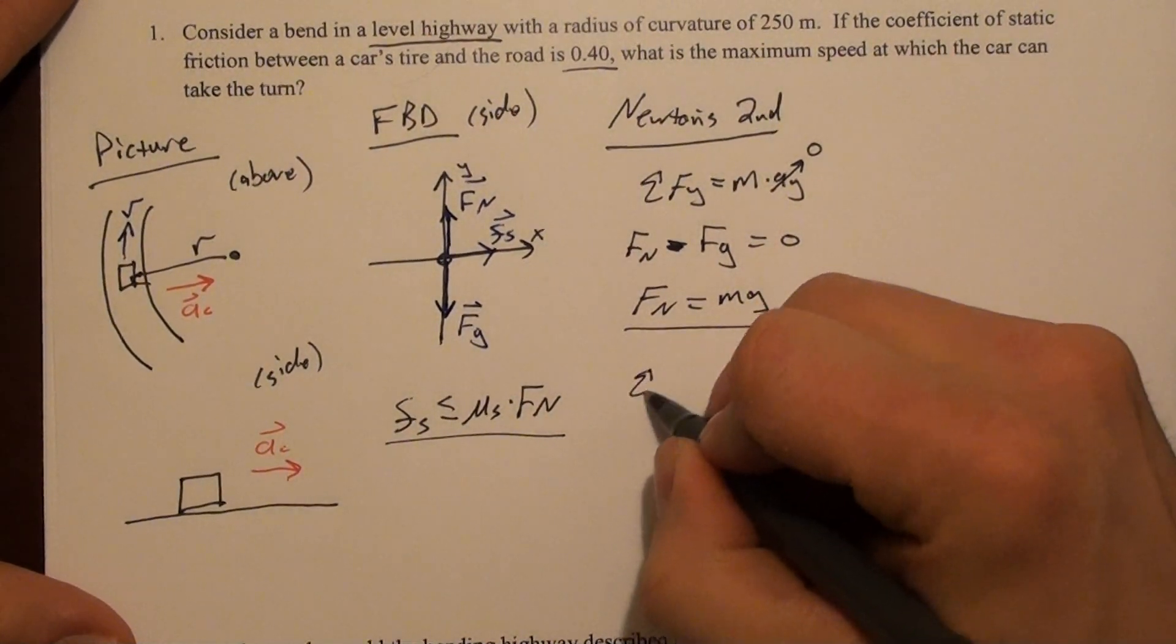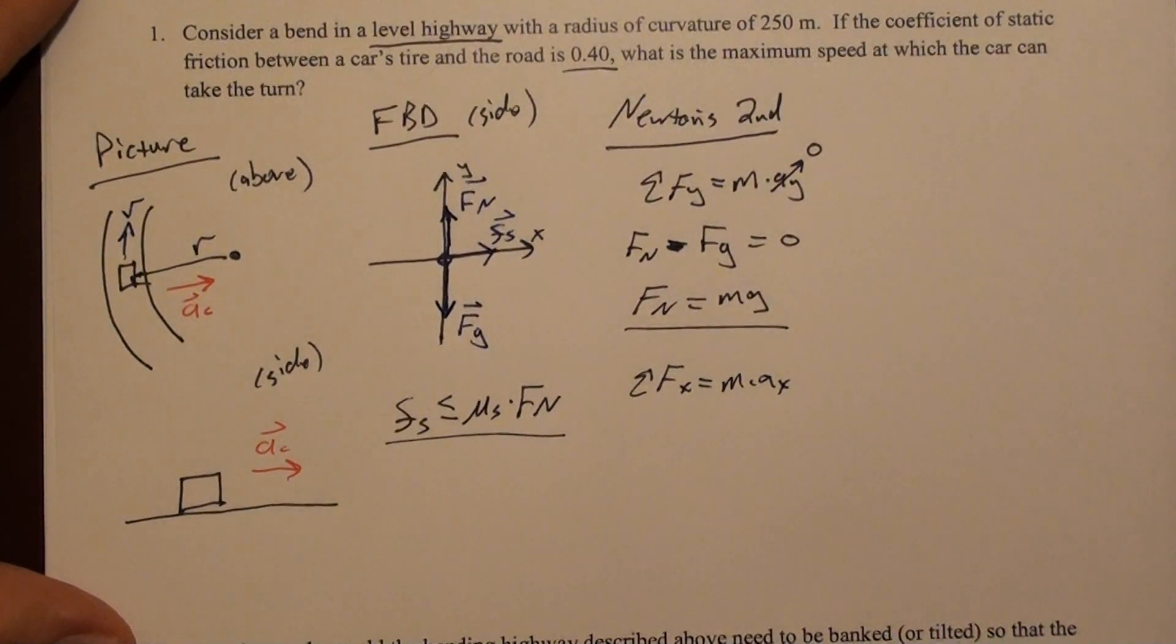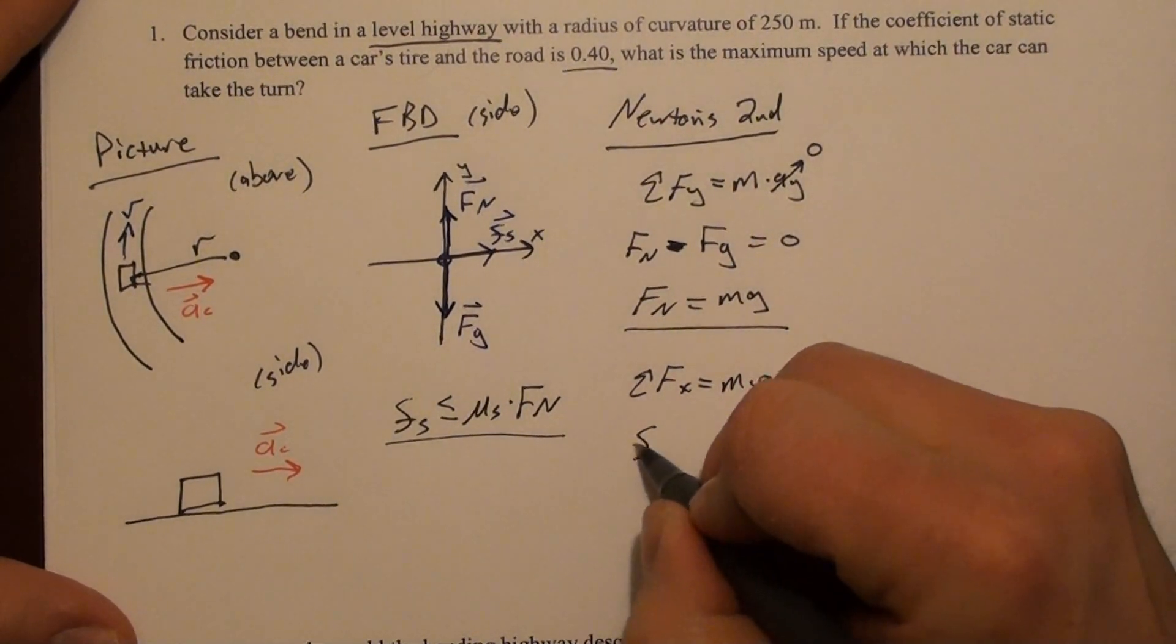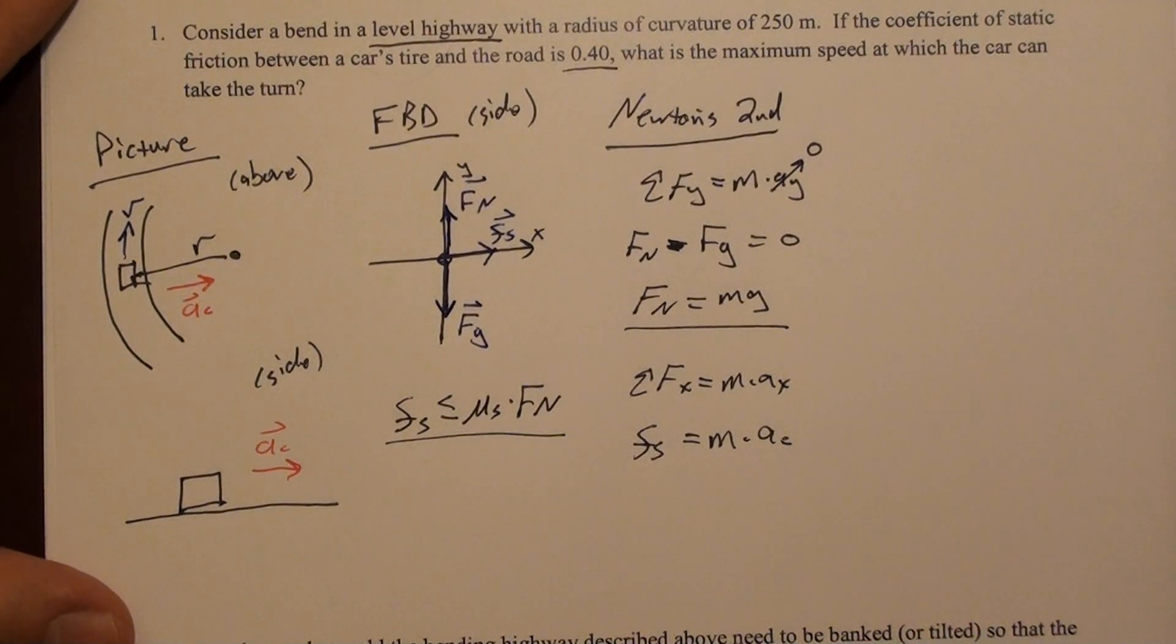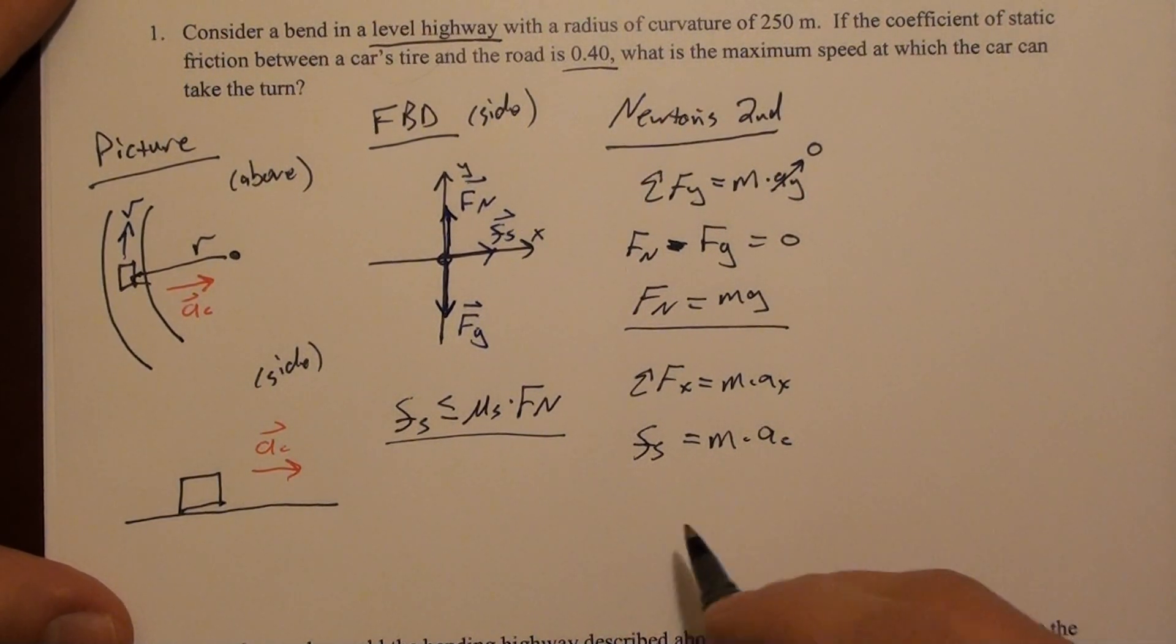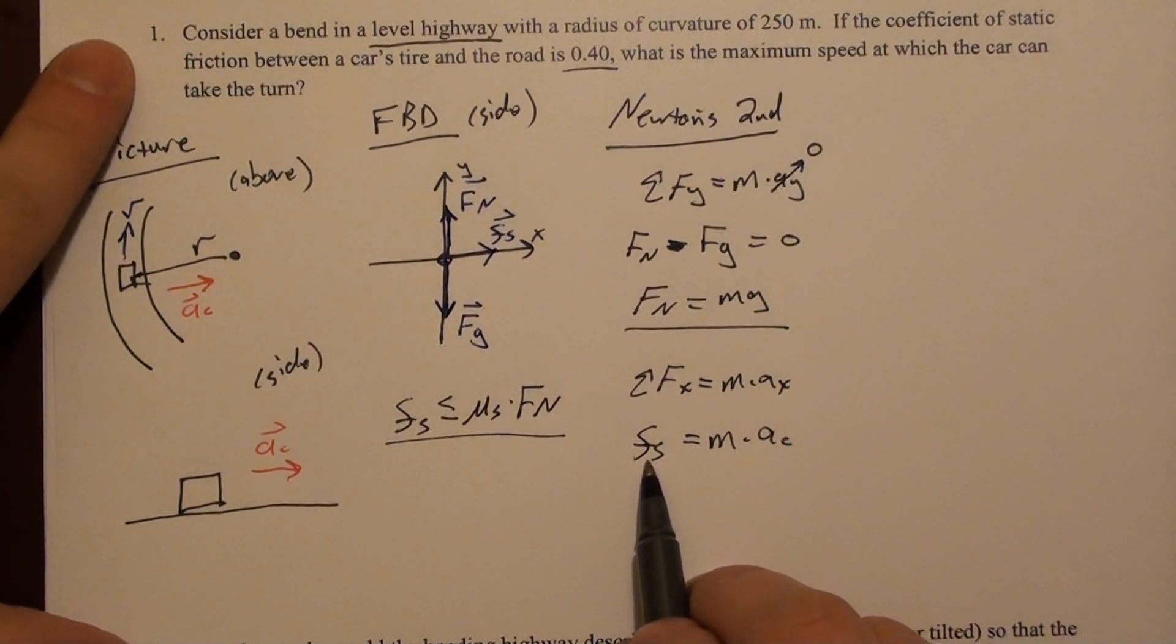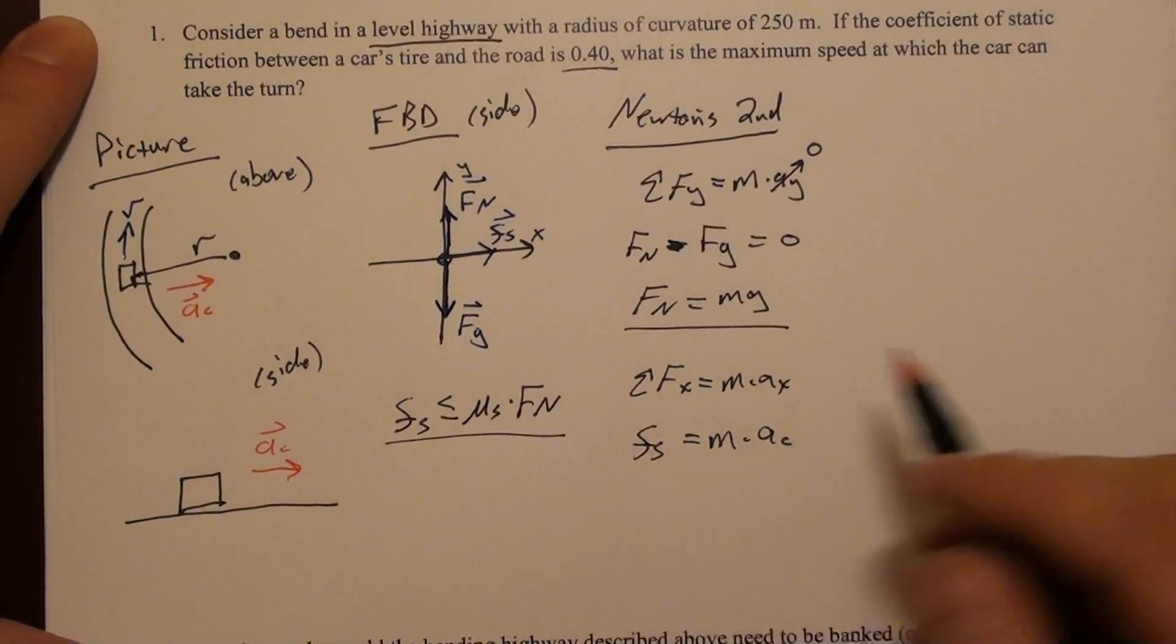Now we can apply Newton's second law in the x-direction. The only force in the x-direction is static friction. The acceleration is centripetal, so the centripetal acceleration will be v² over r. The static frictional force is whatever it needs to be up to a maximum to turn this car at that speed.